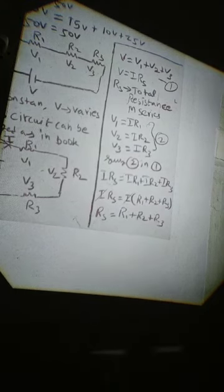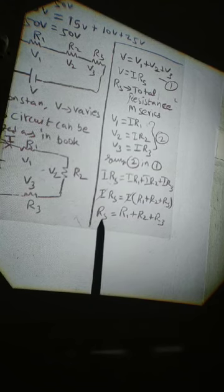Now, if we substitute, IRS equals IR1 plus IR2 plus IR3. Cancel I on both sides, which means RS equals R1 plus R2 plus R3. That is, total resistance or equivalent resistance is equal to the sum of the individual resistances. In the equivalent circuit, this becomes a single equivalent resistance.